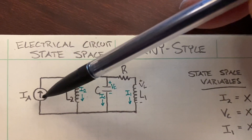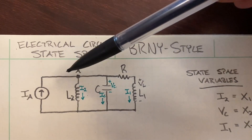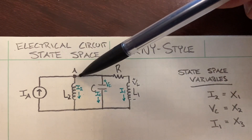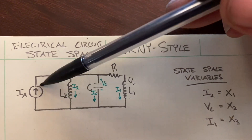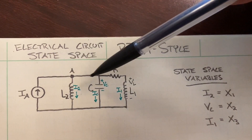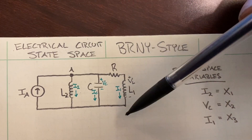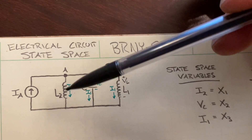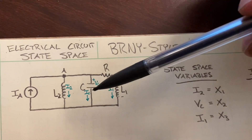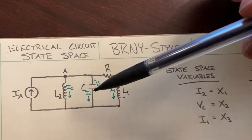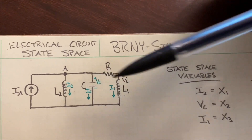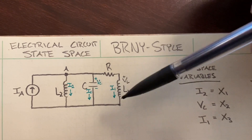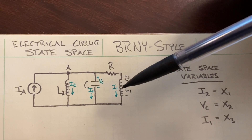We've got a current source. We've got one loop, two loop, and three loop. We've got an inductor in loop one, a capacitor in loop two, and a resistor and an inductor in loop three.